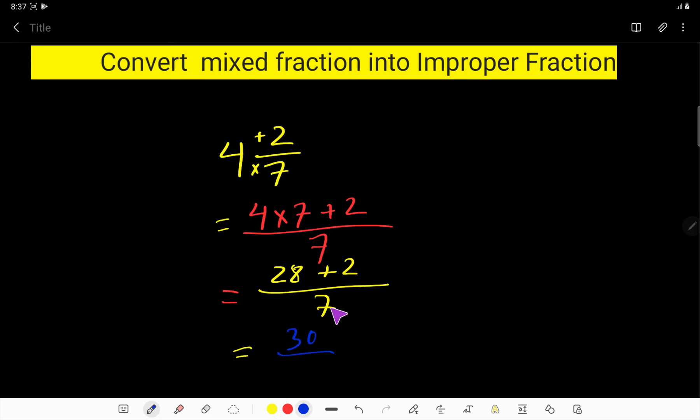And this is the answer. So if you convert four and two sevenths as improper fraction, you will get this. In improper fraction, numerator will be greater than denominator, which is proved here.